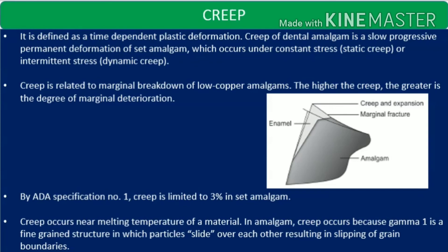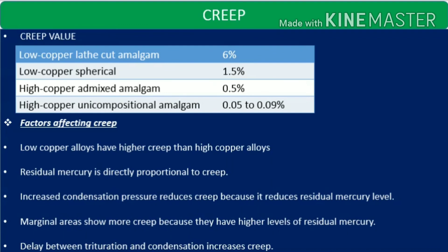Creep is related to the marginal breakdown of low copper amalgams. The higher the creep, the higher the degree of marginal deterioration. By ADA specification number 1, creep is limited to 3% in set amalgam. Creep occurs near the melting temperature of the material. In amalgam, creep occurs mainly because gamma 1 is a fine-grained structure in which particles slide over each other, resulting in slipping of grain boundaries. Creep values: low copper lathe-cut amalgam has 6%; low copper spherical alloys 1.5%; high copper admixed amalgam 0.5%; and the lowest is high copper unicomposition amalgam at 0.05 to 0.09%.